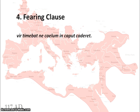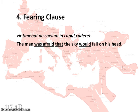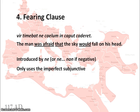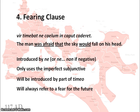The fourth use is a fearing clause — somebody expressing a fear that something will happen in the future. For example: 'vir timebat ne caelum in caput caderet' — the man was afraid that the sky would fall on his head. This is introduced by 'ne', or if negative, 'ne...non' together — one of the very few occasions in Latin where 'ne' and 'non' appear together. It only uses the imperfect subjunctive but always refers to a fear for the future. At GCSE it will always be introduced by a part of 'timeo'.